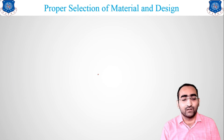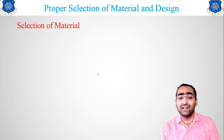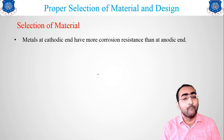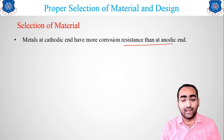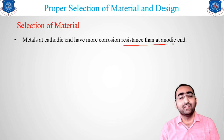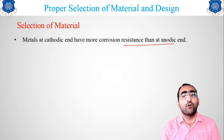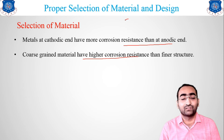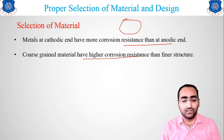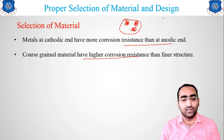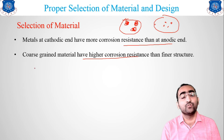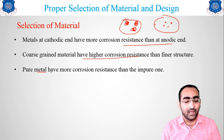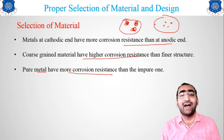The first method — proper selection of material and design — has several sub-points. Metals at the cathodic end are more resistant, so select metals such that whatever you want to save is always the cathode. Coarser grain materials have higher corrosion resistance compared to finer grains. Pure metals also have more corrosion resistance — for example, wrought iron is 99.9% pure iron and has good corrosion resistance.